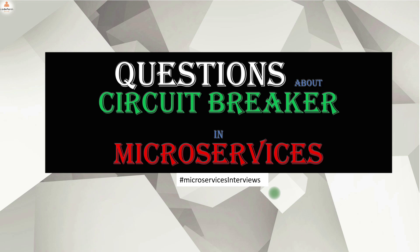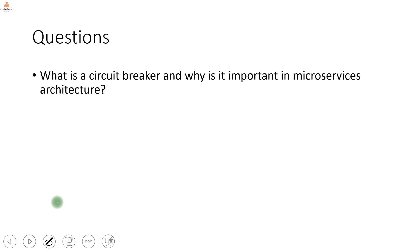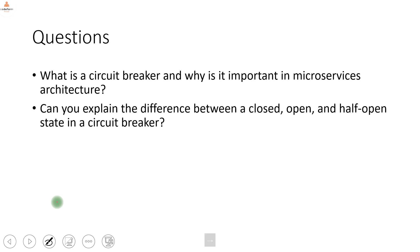This is a continuation of the previous video about circuit breaker. This one is dedicated to all the questions that we can expect in interviews. The first question is: what is the circuit breaker and why is it important in microservices architecture? Give the definition, explain how it helps and why it is important — because it helps maintain resiliency and fault tolerance and prevents cascading failure.